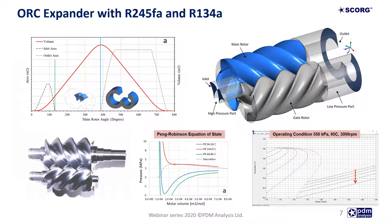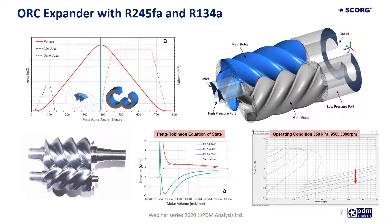This example is of a twin screw expander running with R245FA and R134A fluids. Within SCORG the geometry module allows calculation of chamber volume, inlet and exit areas, which can be used to generate theoretical ports. In initial design phases when real geometry is not available, theoretical ports can be used and the built-in volume index set per the design. Different equations of state such as Peng-Robinson, Redlich-Kwong, and Soave-Redlich-Kwong have been used, and the RefProp database can be coupled directly with the flow solver to assess solution accuracy.